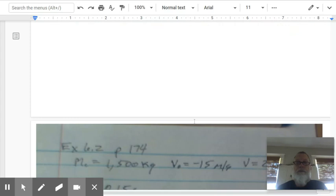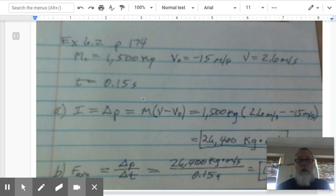Sample problem two, page 174. We have a car that collides with a brick wall, and then it bounces. Here we come in with the idea of bouncing. When you have something that bounces off the surface, you have a much greater change in momentum because it doesn't go from its initial velocity, 15, to 0.